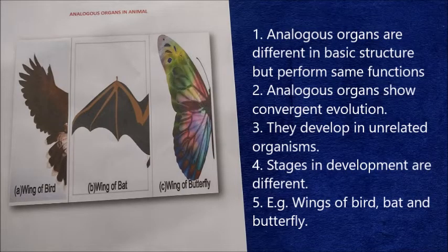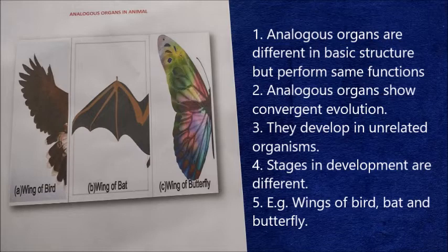In animals also, analogy is seen. For example, the wings of bird, bat, and butterfly. In birds, forelimbs are modified into wings. In bats, wings are modified tetrapod forelimbs, whereas in butterflies the wings are formed from a group of cells set aside during the embryonic stages in the form of imaginal discs.